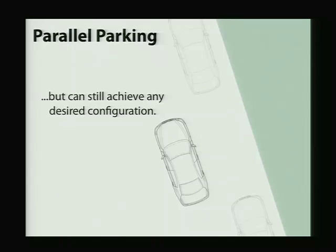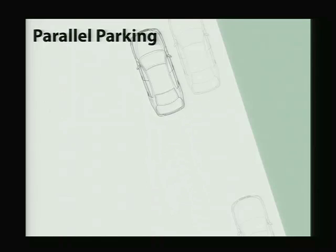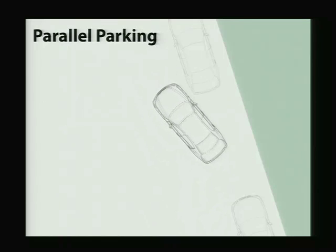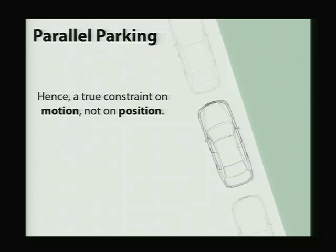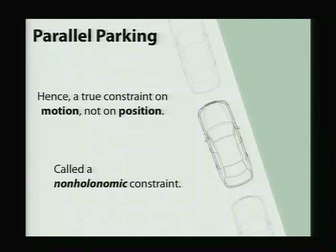If you're talented enough, you can still through a sequence of very careful maneuvers get into that exact same position. So it's clear that whatever the constraint on our system is, it's not just a constraint on position. It's a constraint on the motion of the car. And this kind of constraint is called a non-holonomic constraint. Some constraint that can't be expressed purely in terms of the configuration or the position of your system.